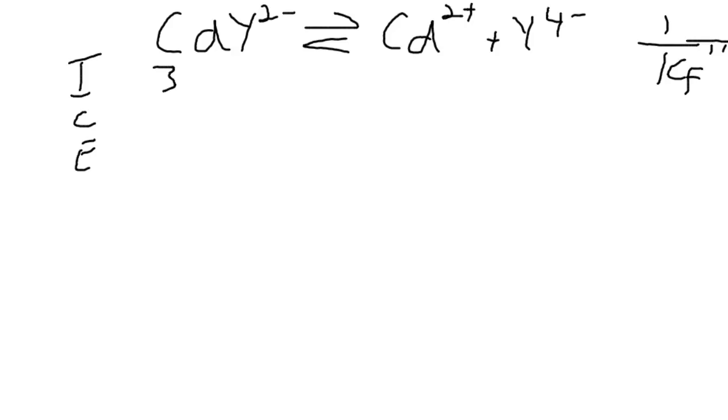And we can do our ICE table. We know our initial concentration of cadmium, it's 3.33 times 10 to the minus 3. It hasn't reacted at this point. So we're going to lose some complex. This will be 1 to 1 again. So we gain the same number of moles of cadmium and EDTA 4-. So this will be 3.33 times 10 to the minus 3 minus x. And the product will be x.